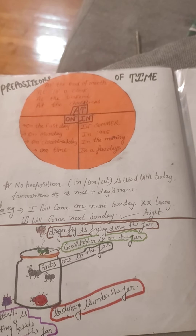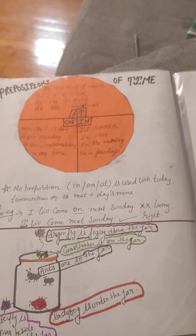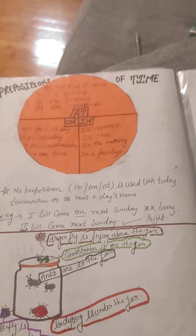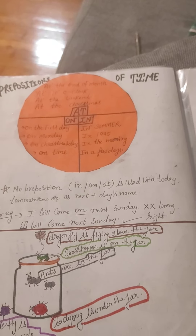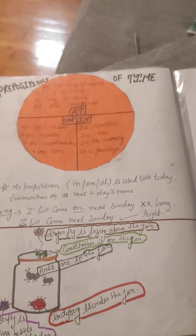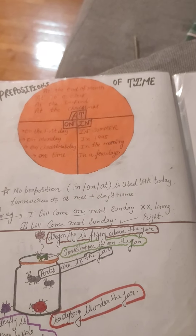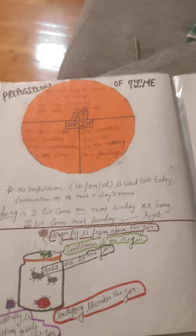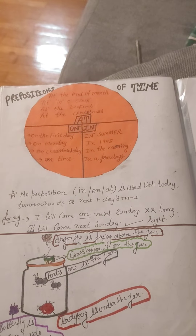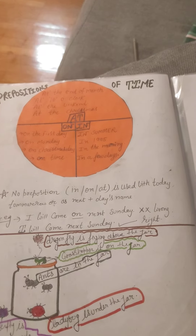No preposition is used with today, tomorrow, or the next day. Next plus day's name — for example, 'I will come on next Sunday' is a wrong sentence. The right sentence is: I will come next Sunday.